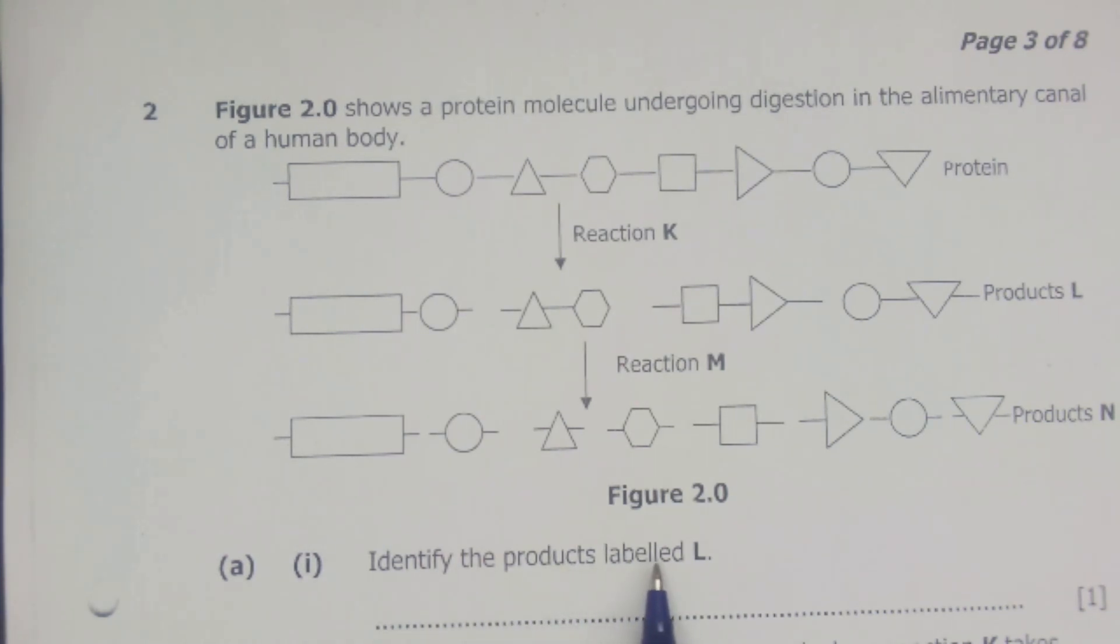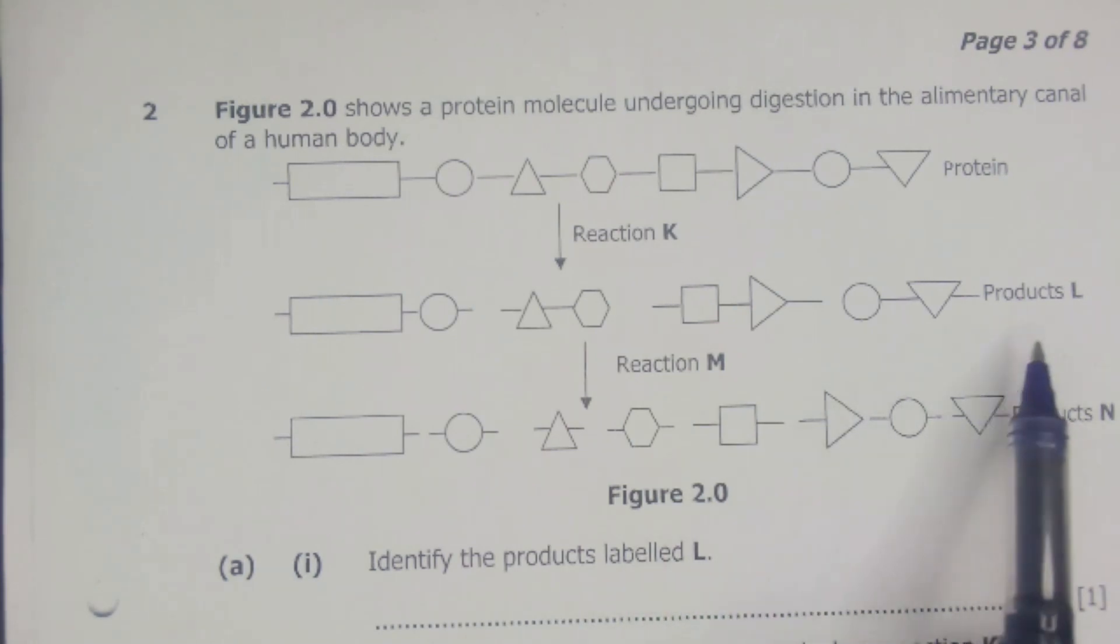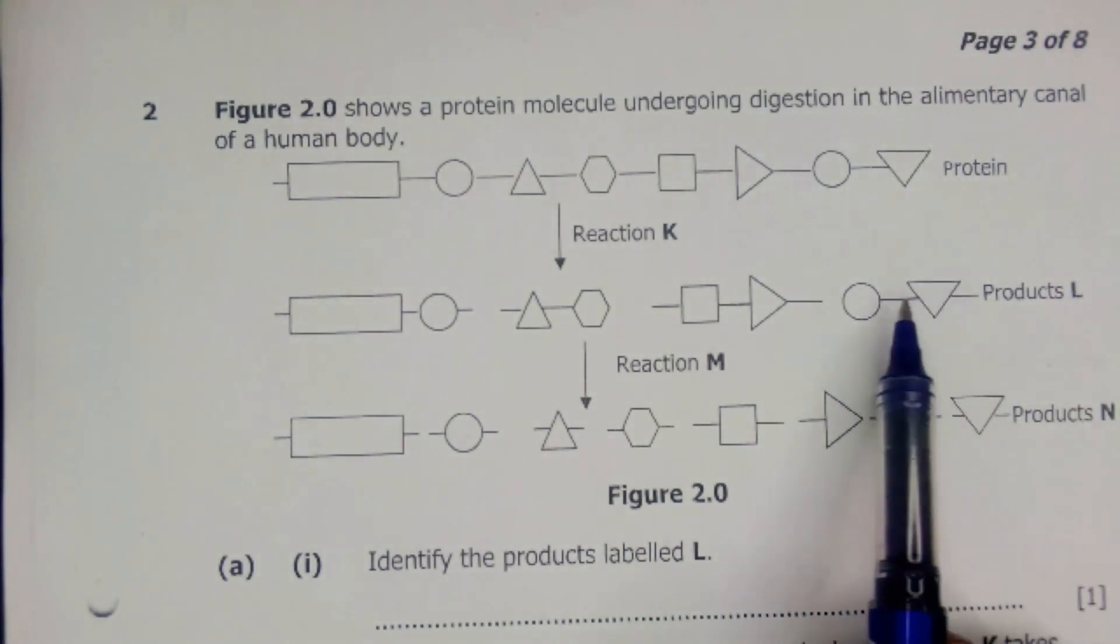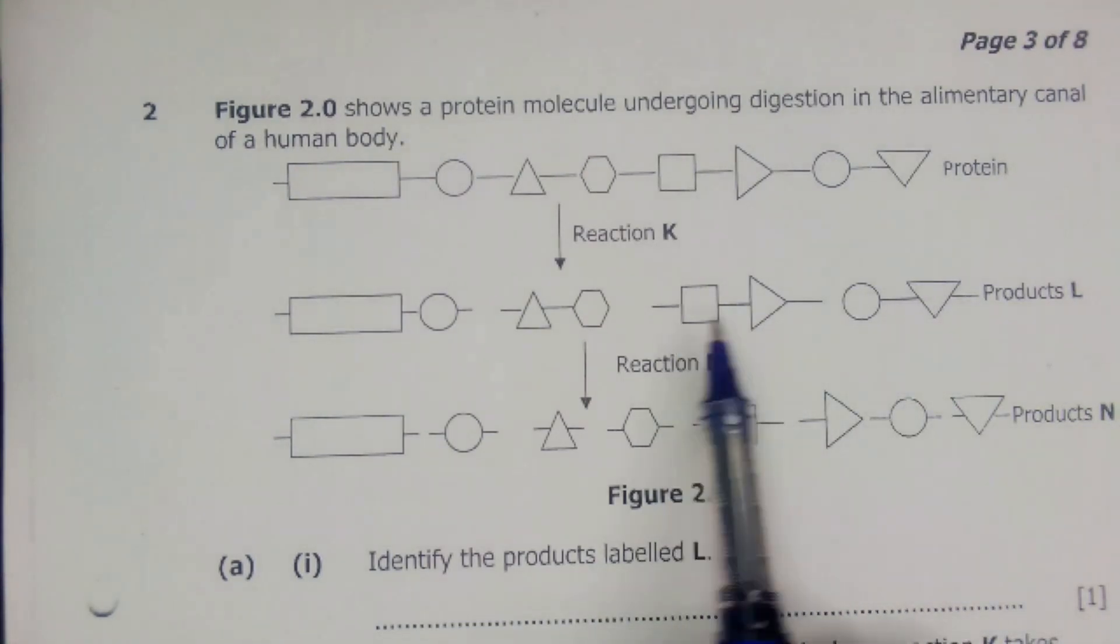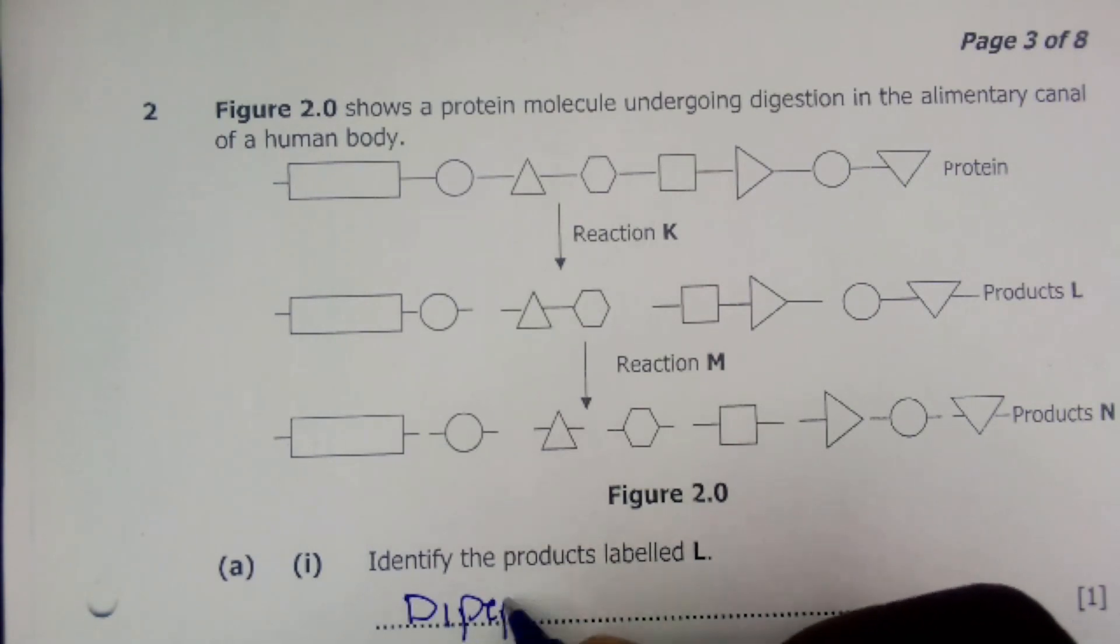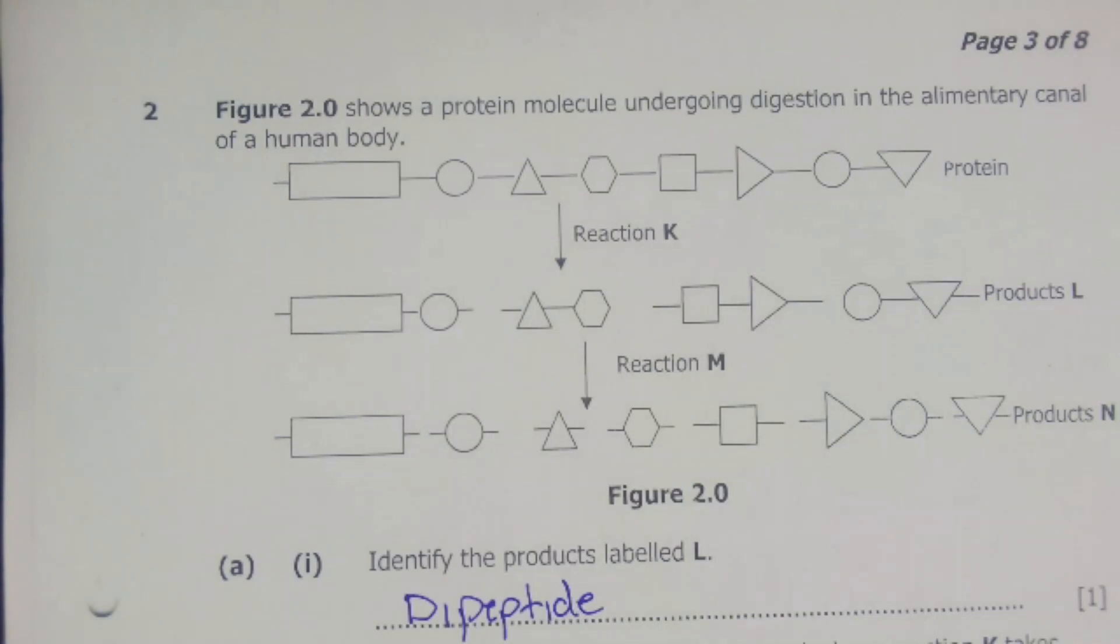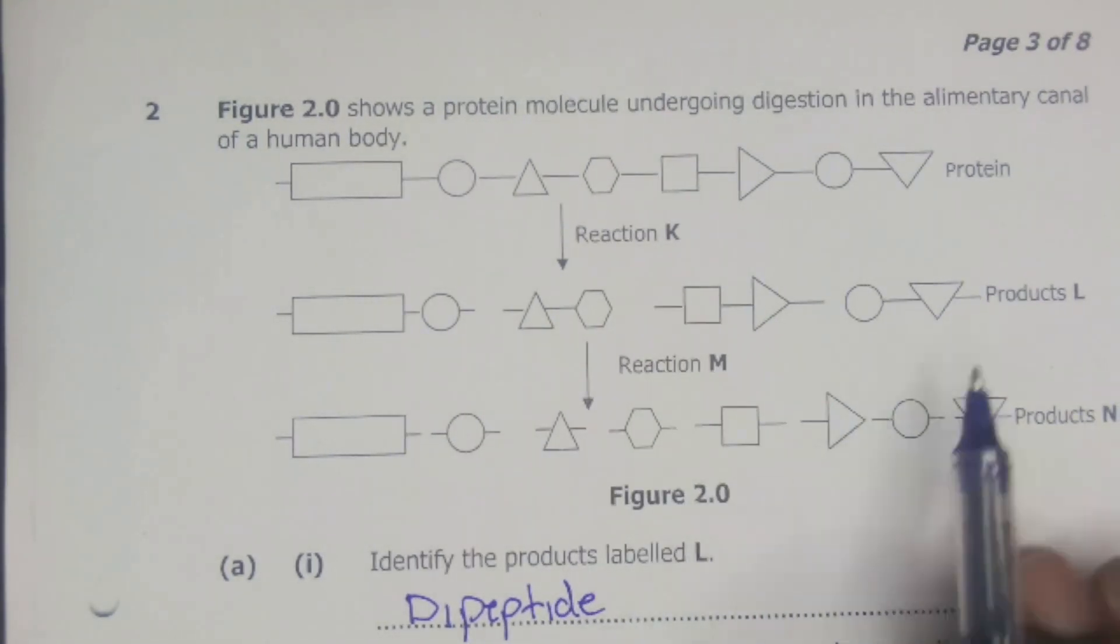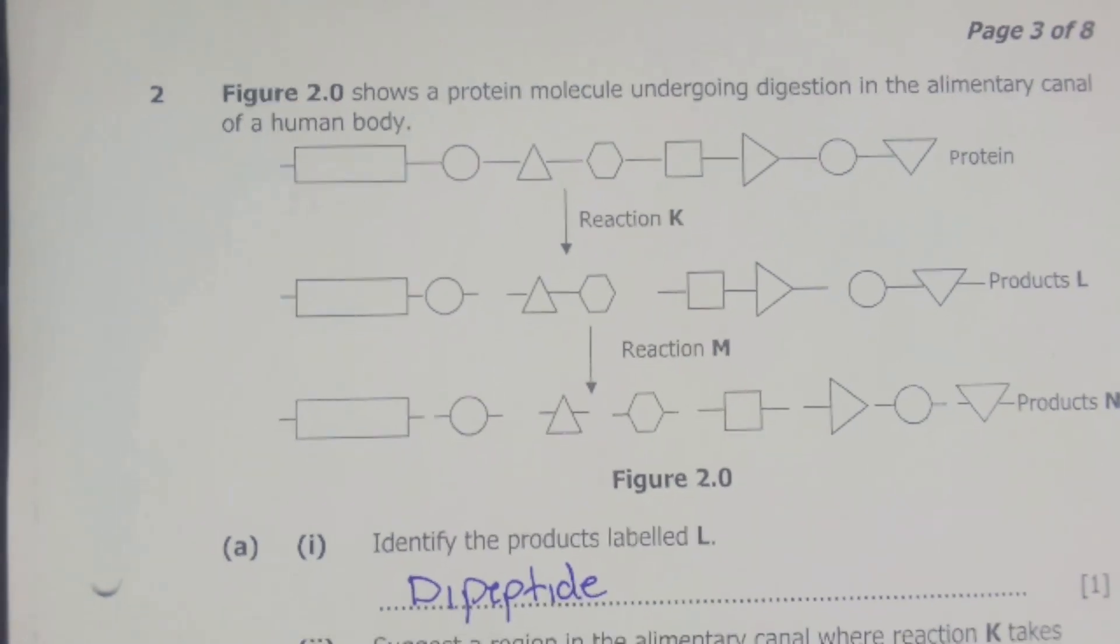The first question A1 is asking us to identify the products labeled L. We are talking about these products which are consisting of two pieces coming from the protein. This is what we refer to as a dipeptide. A dipeptide is simply a combination of two amino acids. That was the solution to question number A1.